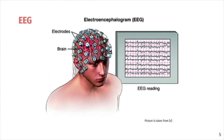First of all, I want to describe what EEG itself is. EEG, or electroencephalography, is a method to record electrical activity of the brain. It is typically non-invasive, with the electrodes placed along the scalp. Each electrode records its own channel.